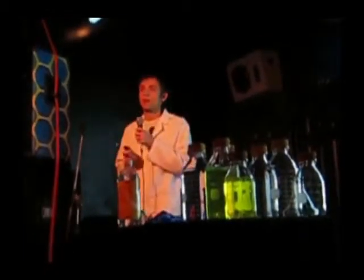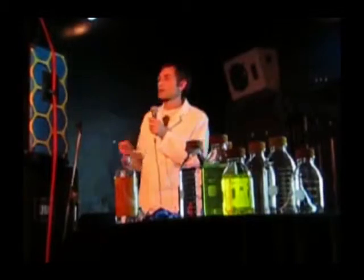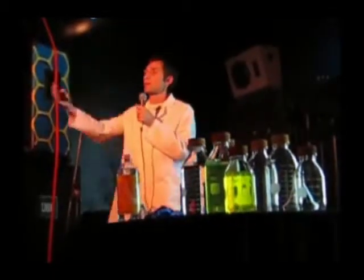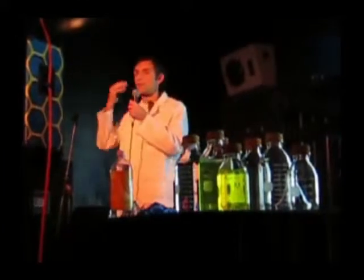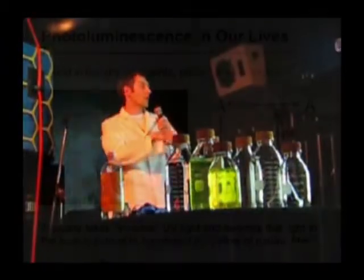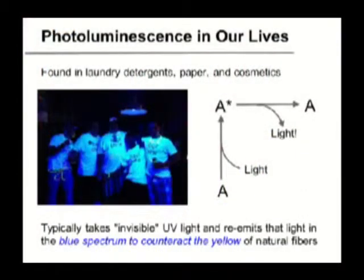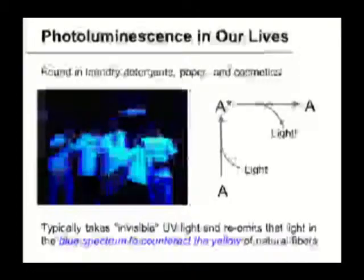Photoluminescence — you see this all the time, every single day. Every time you look at white fabric, paper, or cosmetics, these compounds are there. Photoluminescence is light absorbed into the electronic state of a compound and then emitted again with a slight change in wavelength based on some energy loss. Fluorescent compounds in laundry detergent, paper, and cosmetics convert invisible UV light — just outside the visible spectrum — into blue light that we can see, essentially giving an optical illusion that the material is glowing.